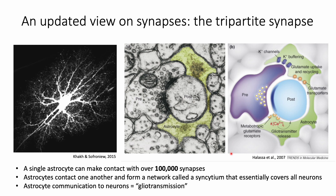Astrocytes also make contact with other astrocytes in a network called the syncytium that essentially encompasses all neurons. Communication from astrocytes to neurons is broadly termed gliotransmission.